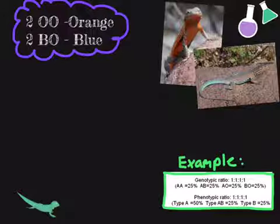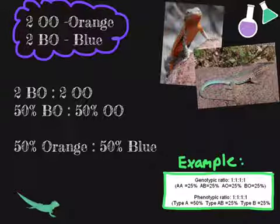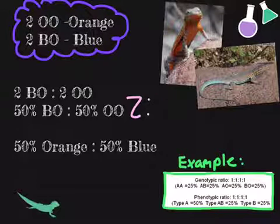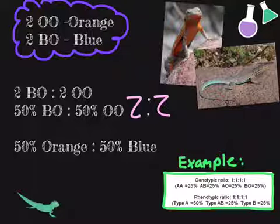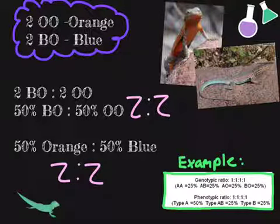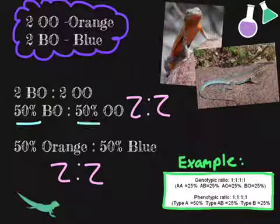Now that we know the offspring from the Punnett square, we are going to put these numbers into a ratio. The genotype ratio is going to be 2 to 2, and the phenotype ratio is also going to be 2 to 2, or 50% BO and 50% OO, or 50% orange and 50% blue for the phenotype.